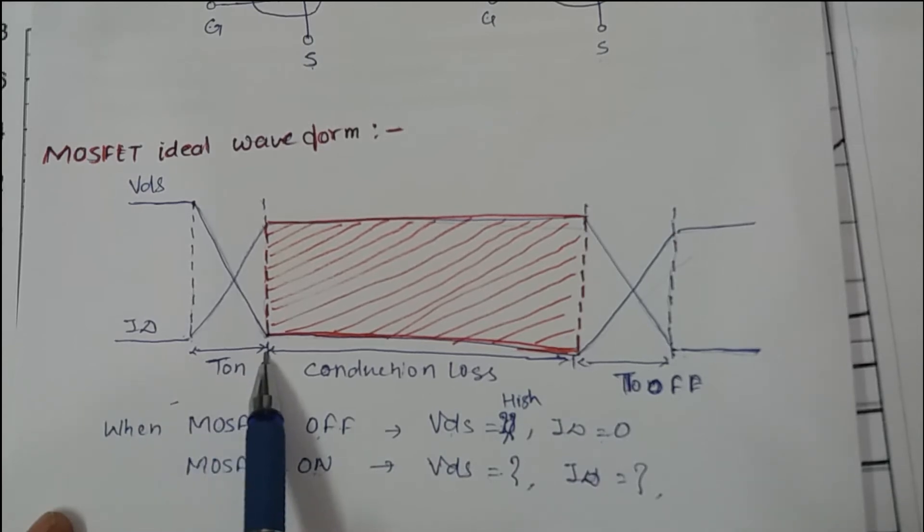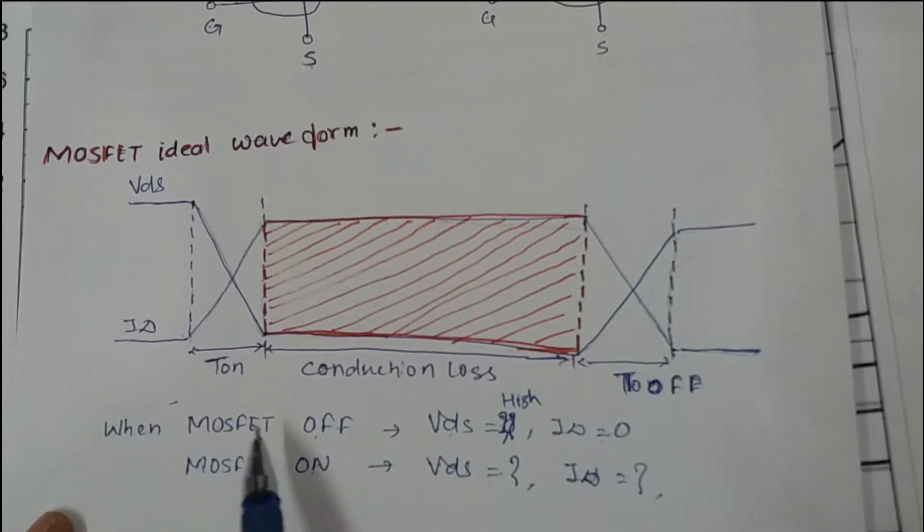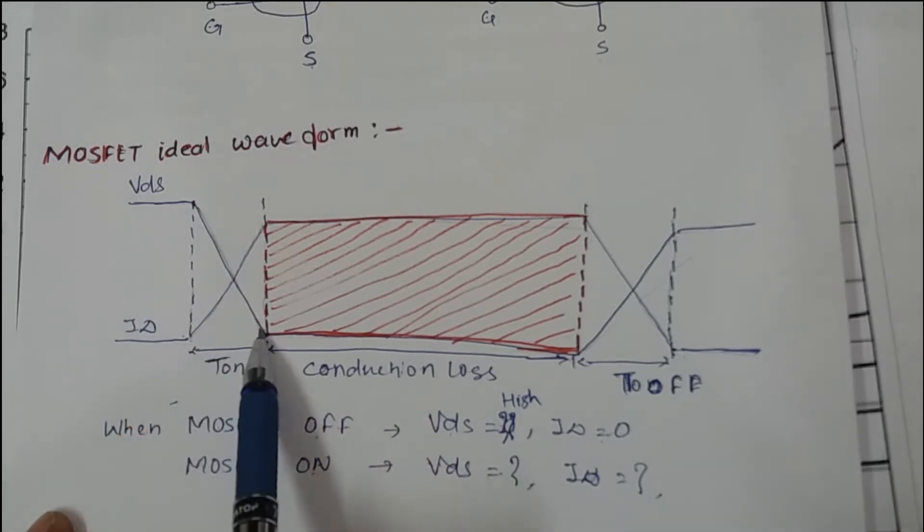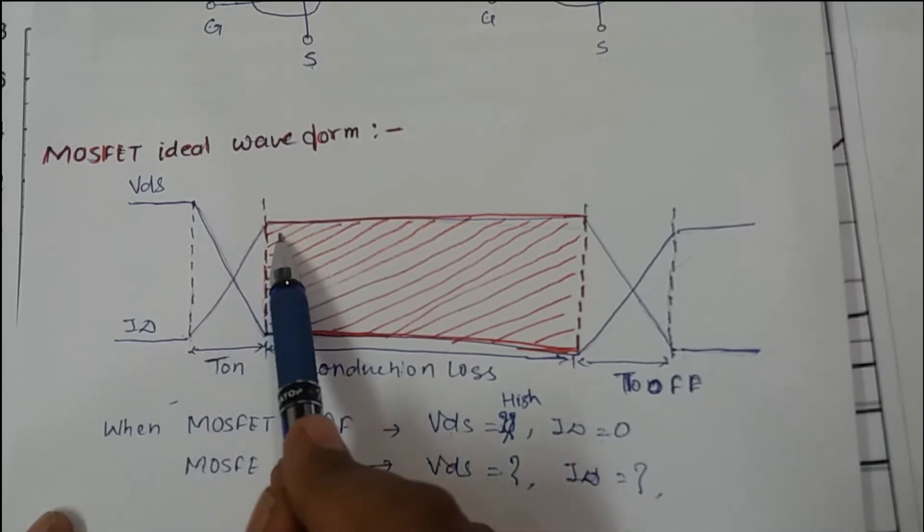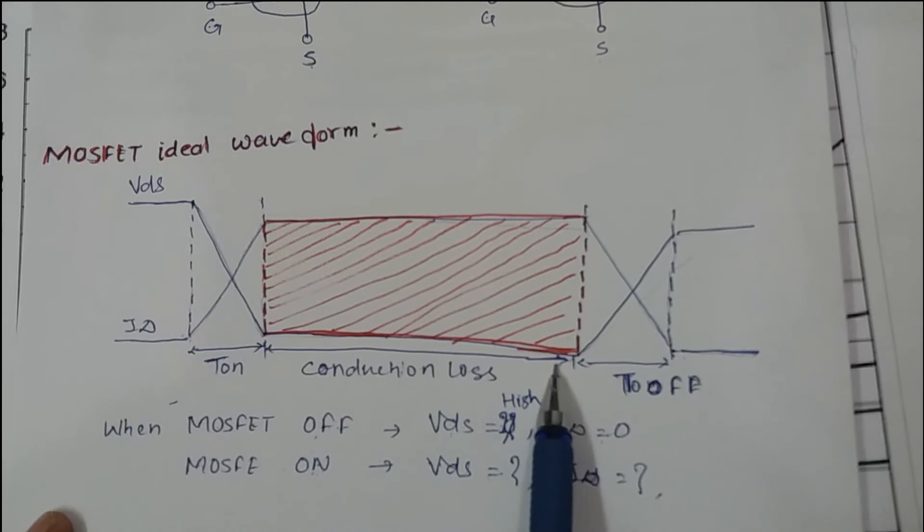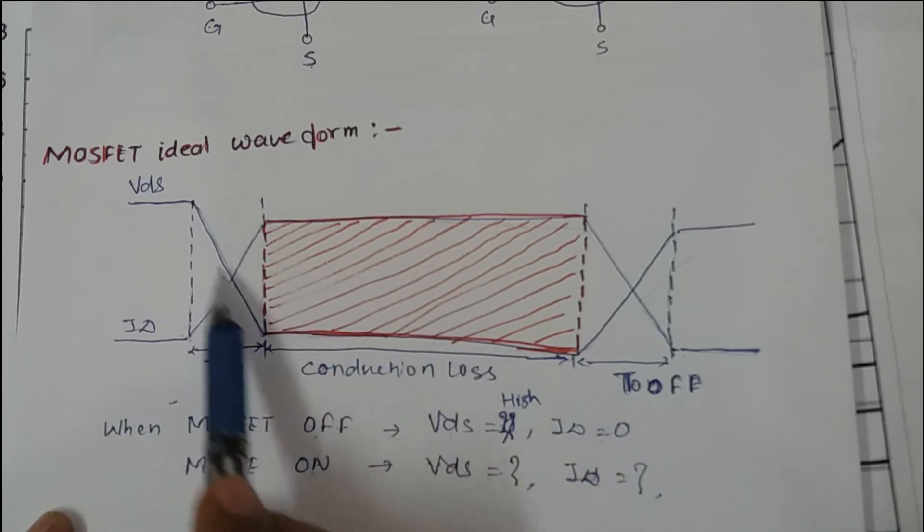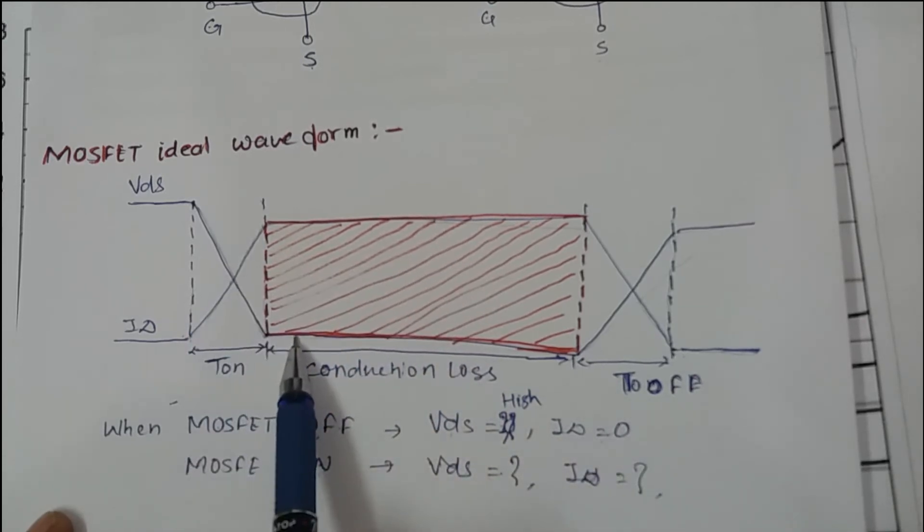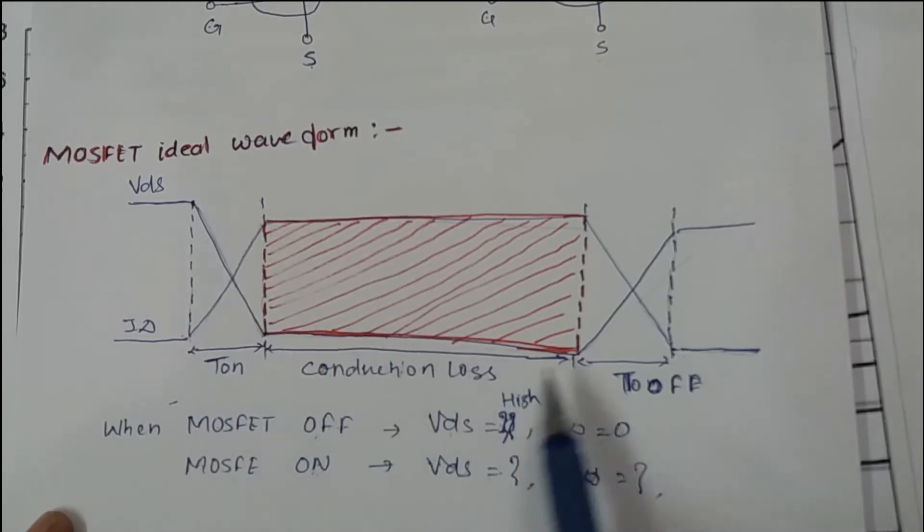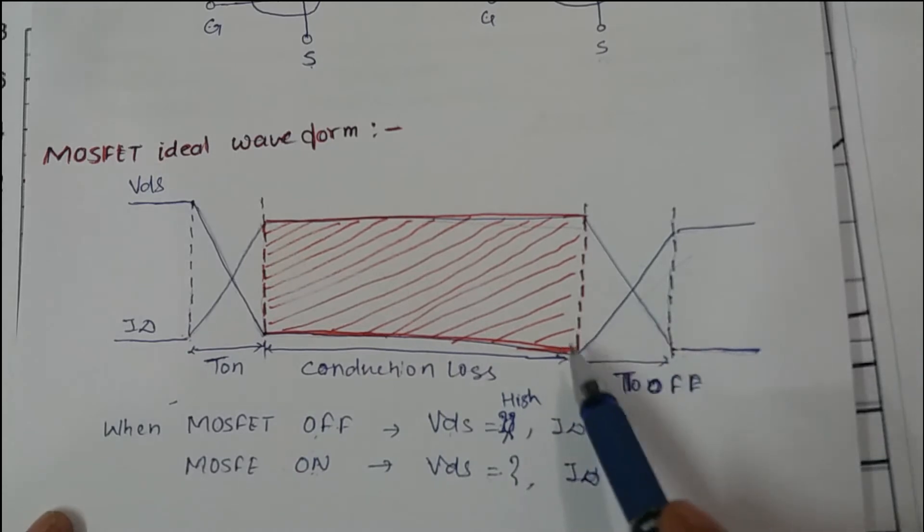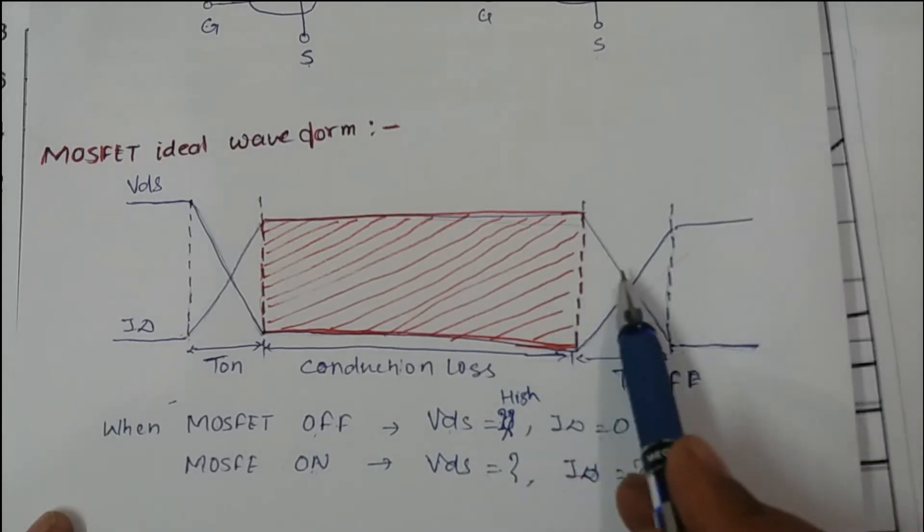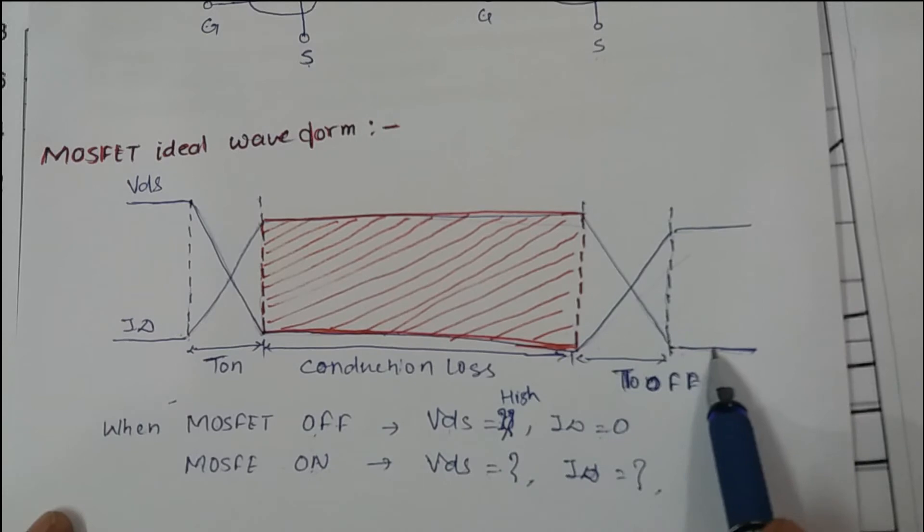So this one is T on time. In T on time, VDS starts decreasing and ID starts increasing. This is conduction time. So this is conduction time where ID is equal to maximum and VDS equals to approximately 0, not equal to 0. This is T off time. VDS starts increasing and ID starts decreasing.